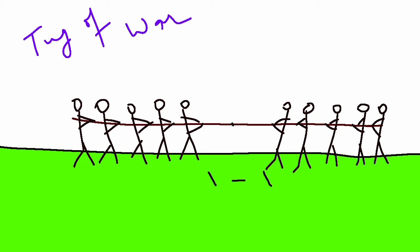So let's imagine that both teams have equal strength and the center of the rope is at exact position and it is not moving anywhere.